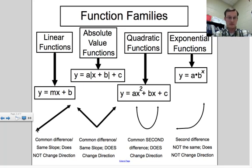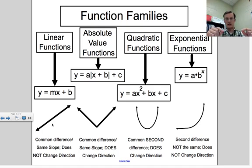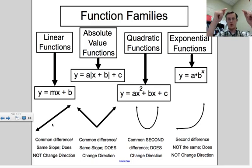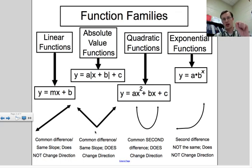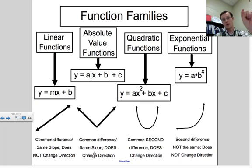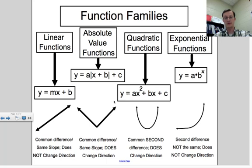A linear function looks like a straight line. There's a common difference — when x goes up by a constant amount, y goes up by a constant amount. The rate of change, change in y over change in x, rise over run, should be the same each time. It does not change direction. Absolute value will have a vertex — that corner — and it will change directions. It has the same slope magnitude but turns, going one way and then the other.